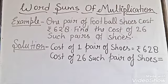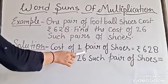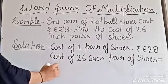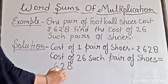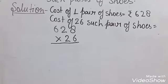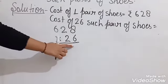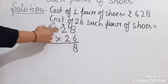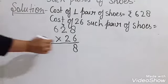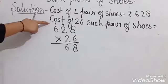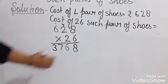We know that the cost of one pair of shoes is rupees 628. We need to multiply the cost of one pair of shoes with the total number of shoes, which is 26. Now we multiply 628 by 26. Now we start multiplication with one's place digit.